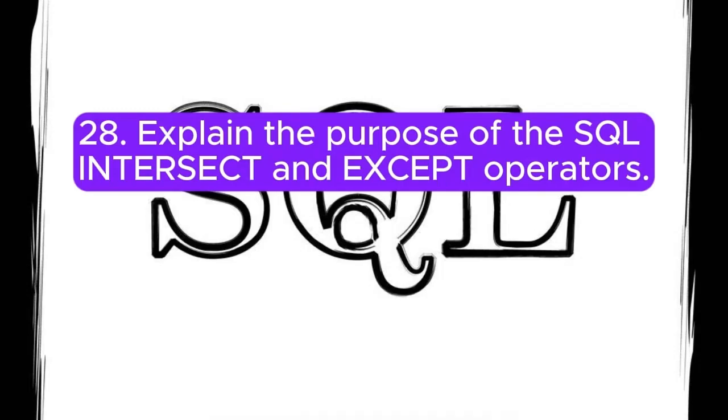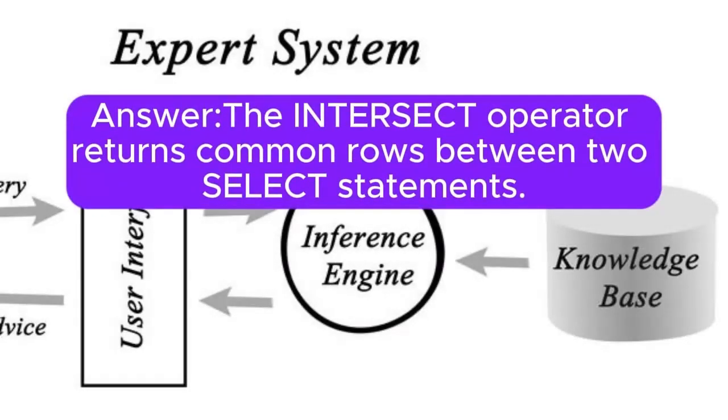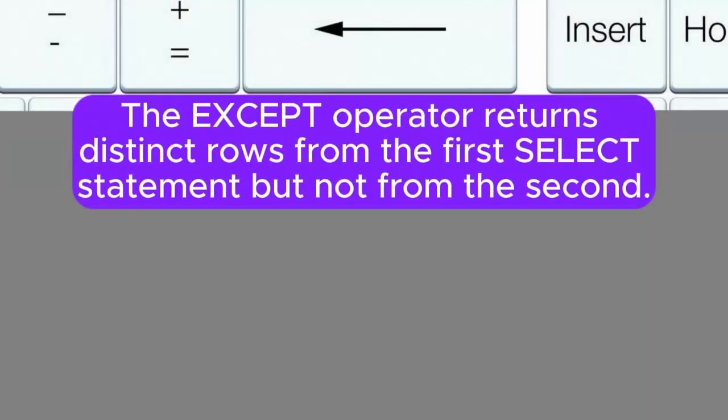Question 28: Explain the purpose of the SQL intersect and except operators. Answer: The intersect operator returns common rows between two select statements. The except operator returns distinct rows from the first select statement, but not from the second.